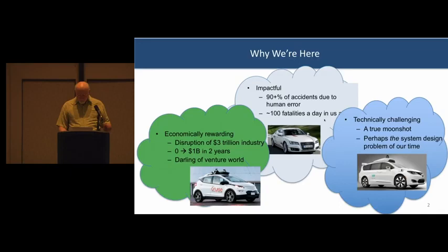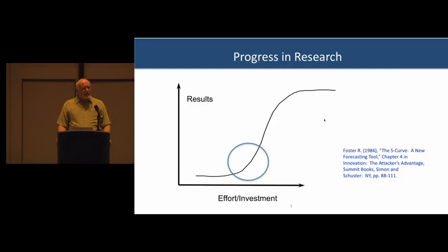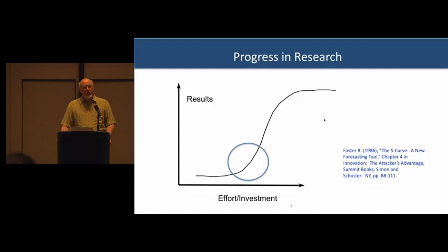With my 40-year research perspective, I'd like to look at this diagram by Foster. It's the observation that if you look along the x-axis, in research areas you spend a lot of time — that's effort on the x-axis — seeing relatively little results on the y-axis. And then you have periods where you do a little bit more effort and things rapidly take off, and then after some time you reach a plateau where things don't improve very much.